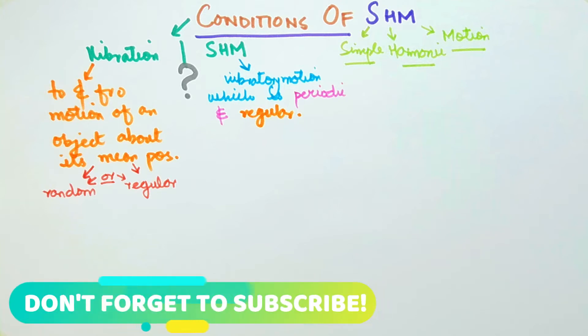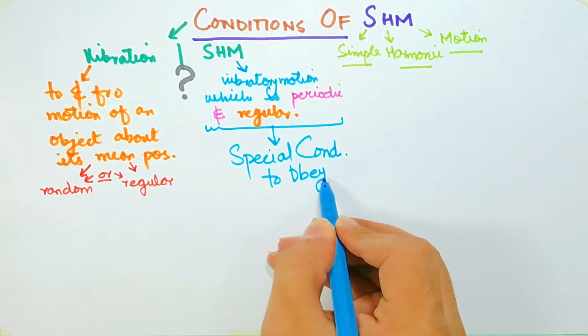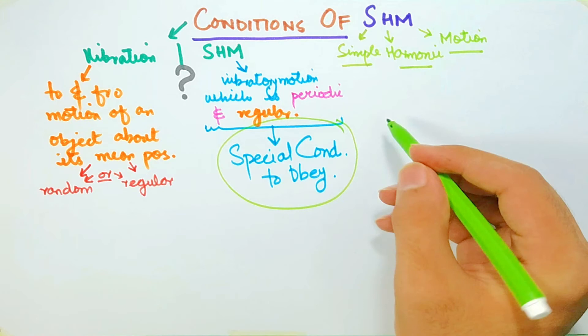More about periodicity in the video link given in the description box below. To maintain that regular and periodic motion of simple harmonic motion, special conditions should be fulfilled.